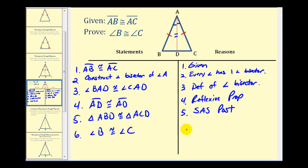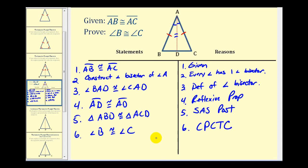The reason for this is that corresponding parts of congruent triangles are congruent, abbreviated CPCTC. And now we have a complete proof of the isosceles triangle theorem.